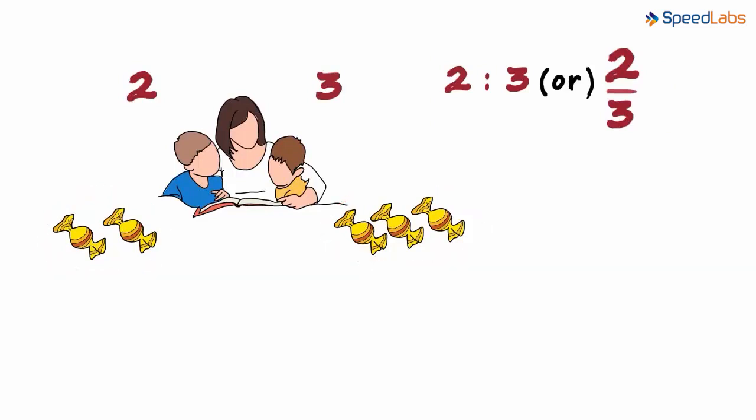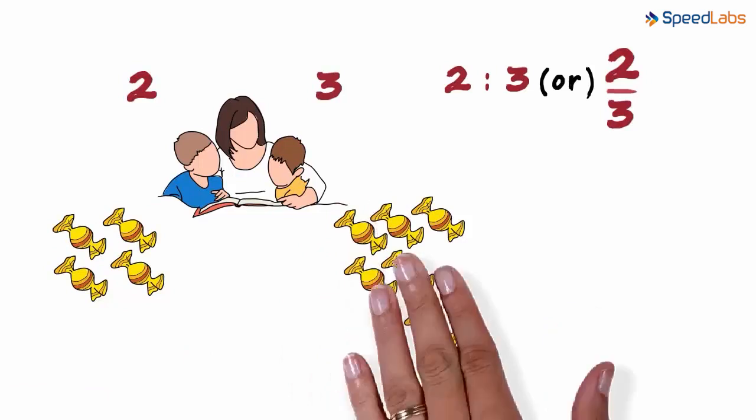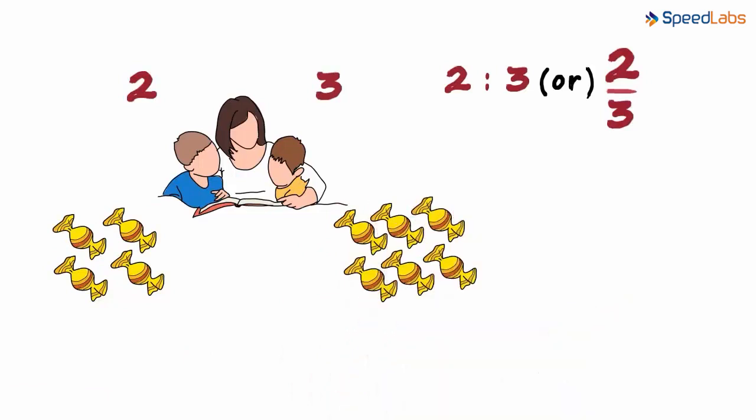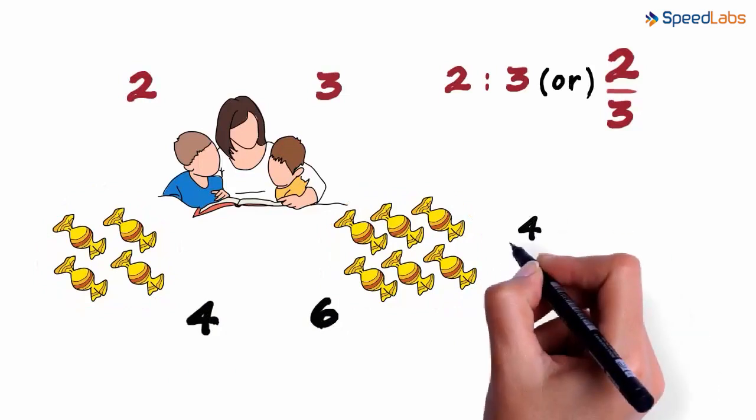This went on for quite a few days. So every time the magic hand gave two chocolates to Gaurav, it gave three chocolates to Jai. Now let's count the total number of chocolates each of them have. Gaurav has 4 and Jai has 6. The ratio now becomes 4 by 6.